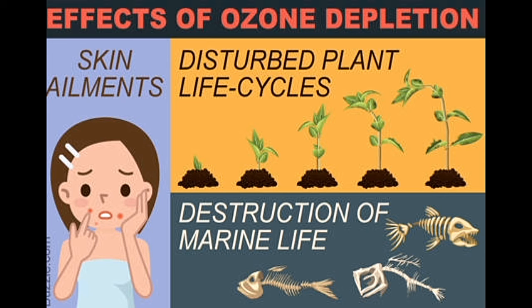Effects on marine ecosystems: Plankton, phytoplankton, and bacterioplankton are threatened by increased UV radiation. Marine phytoplankton play a fundamental role in both the food chain as well as the oceanic carbon cycle. It plays an important role in converting atmospheric carbon dioxide into oxygen. Ultraviolet rays can influence the survival rates of these microscopic organisms by affecting their orientation and mobility. This eventually disturbs and affects the entire ecosystem.